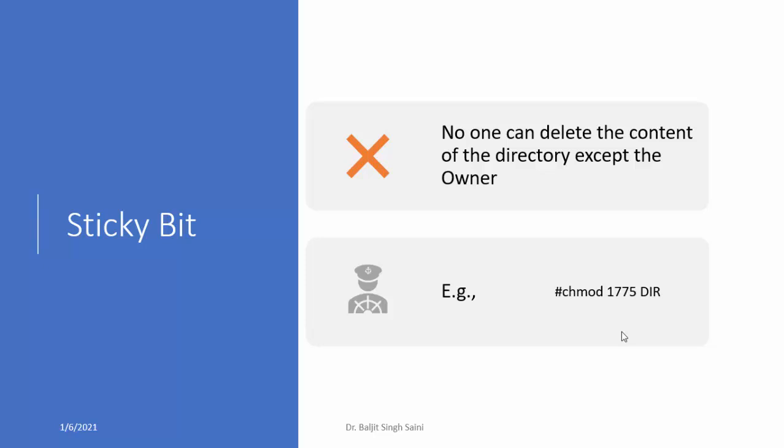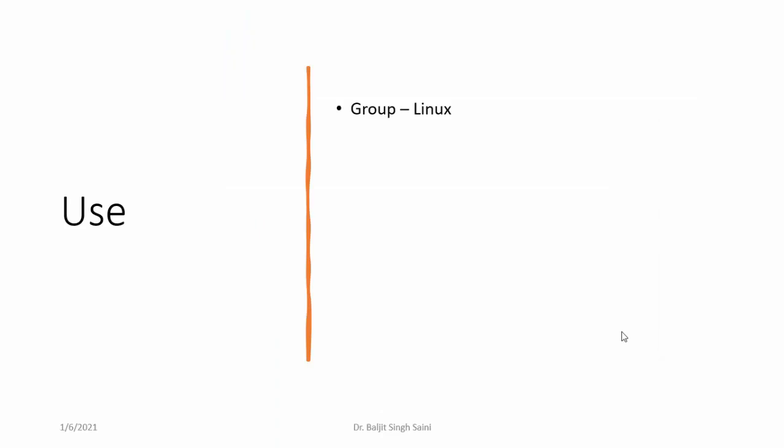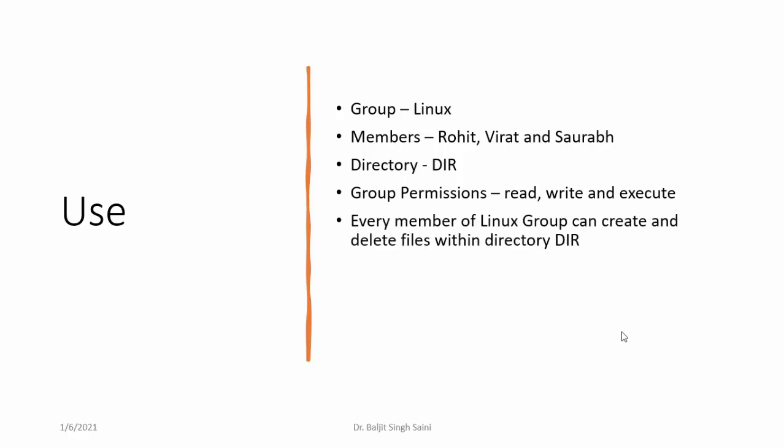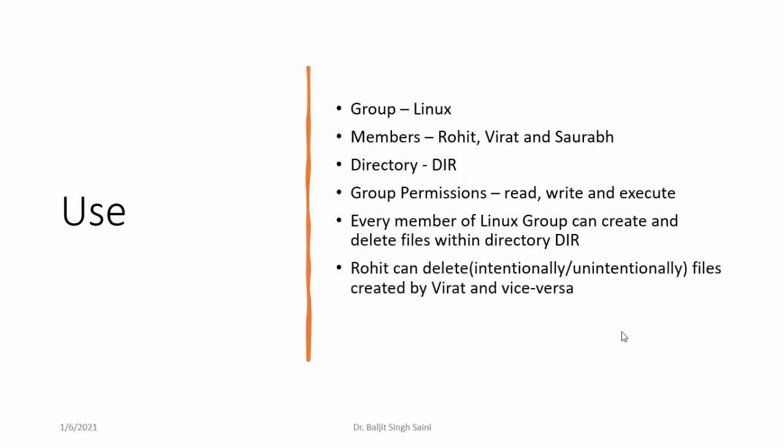Let me explain this with an example. Suppose there is a group Linux with three members, and there is a directory called dir where the group owner is Linux and the permissions are read, write, and execute. Since the directory has write permission for the group, every member within the group can create or delete files. Every member of the Linux group will be able to delete the files within directory dir, even if they were created by someone else.